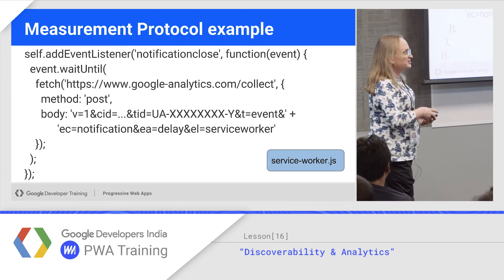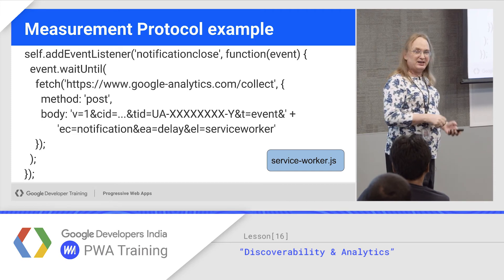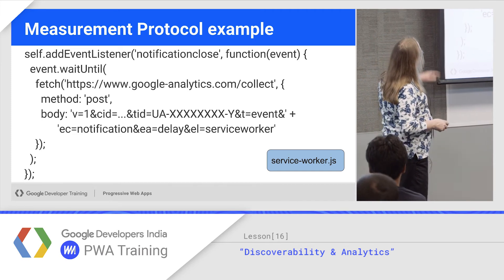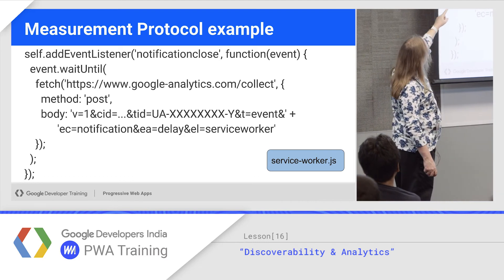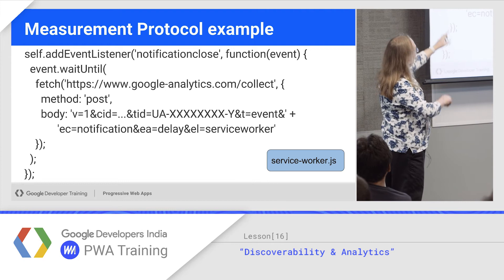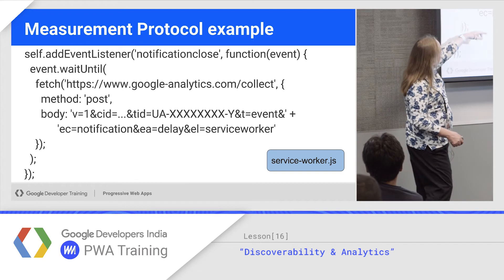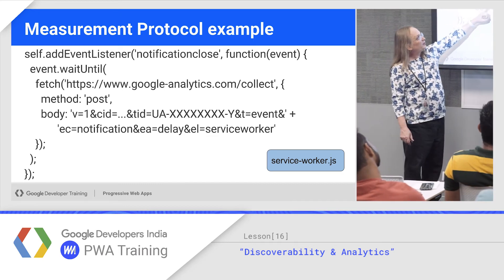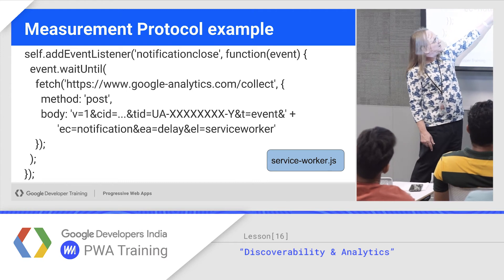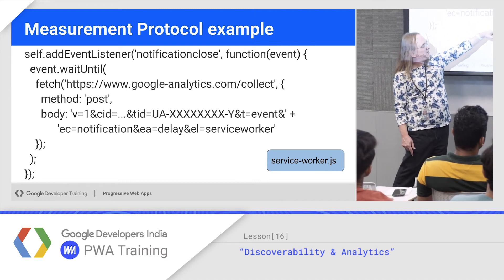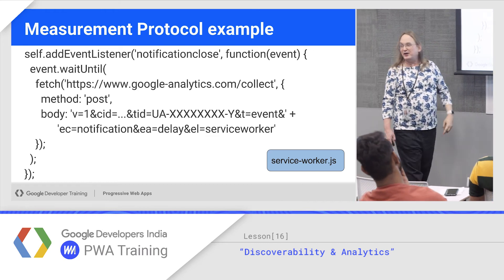I'm going to listen for somebody who gets a notification and closes it, and post an analytics event for that. So on close, do the wait-until to keep things alive, do a fetch on the Google Analytics endpoint — it's googleanalytics.com/collect. Post a version one message, leave the CID alone, set your tracking ID to whatever your ID is, define your event, and add your various values afterwards.